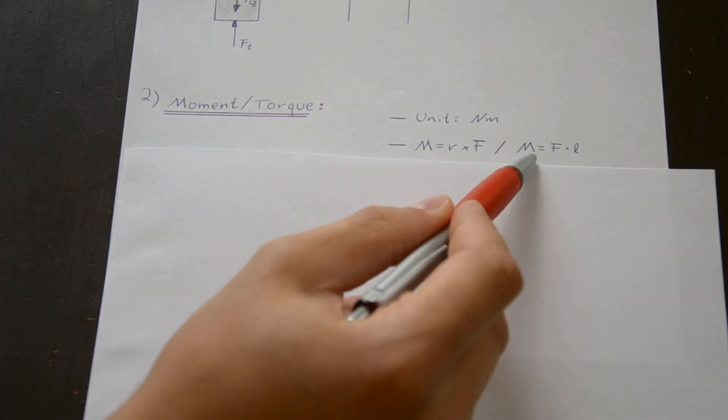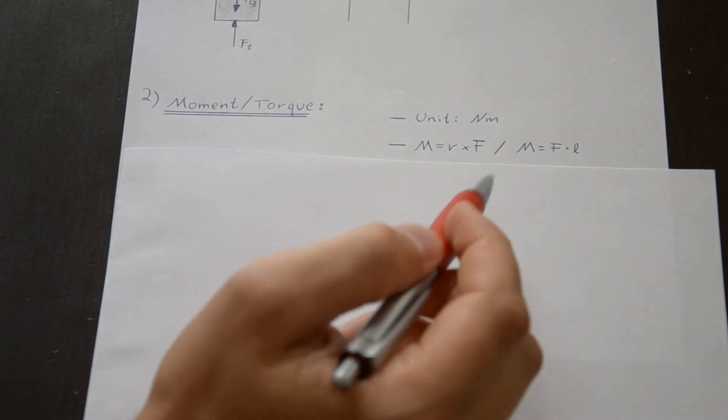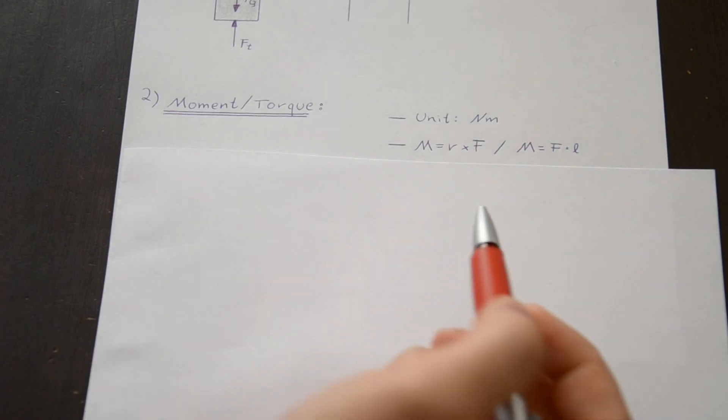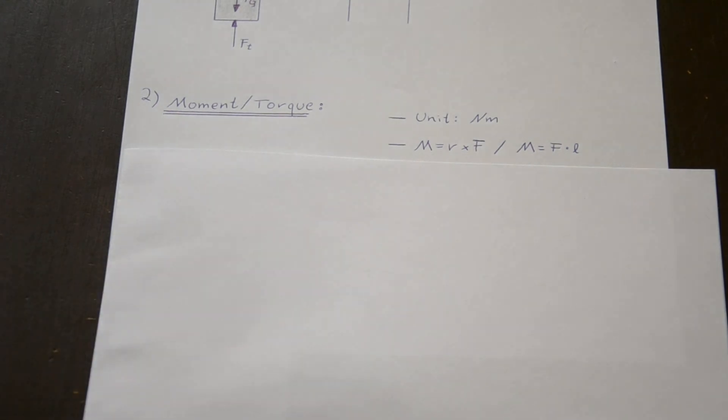When using this one, the formula F times L, you have to really be careful about the right angle. So the distance from the force to the specific point at which you want to have the torque has to be at right angles to the line of action of the force. The so-called line of action is the line which is equal to the direction of the force.